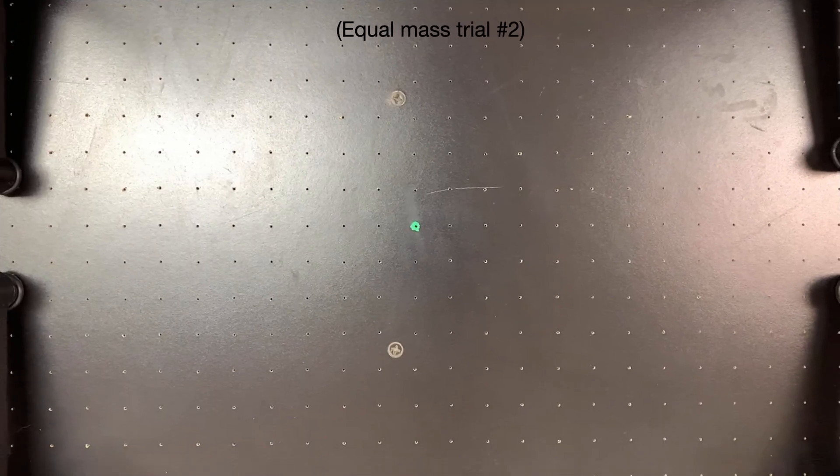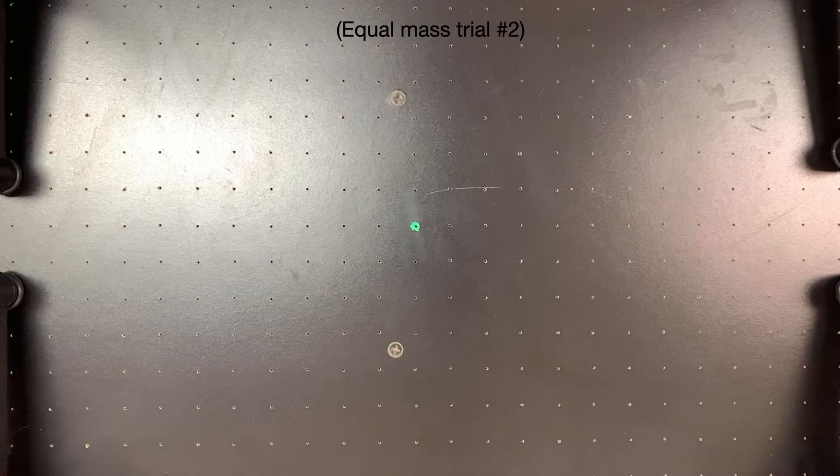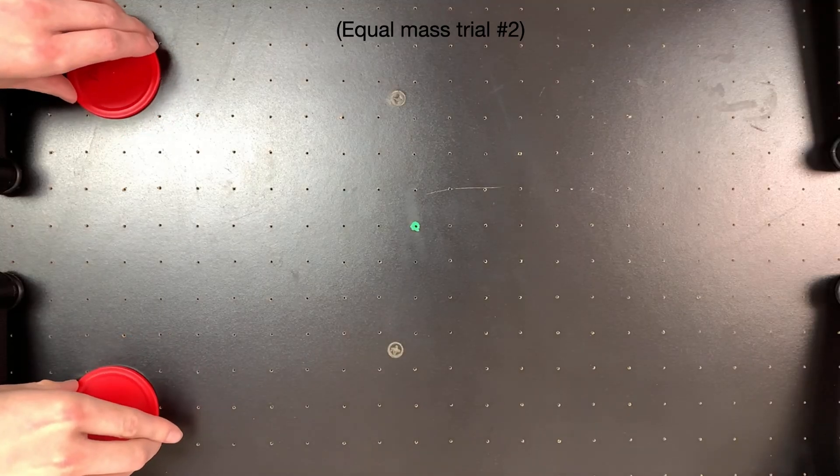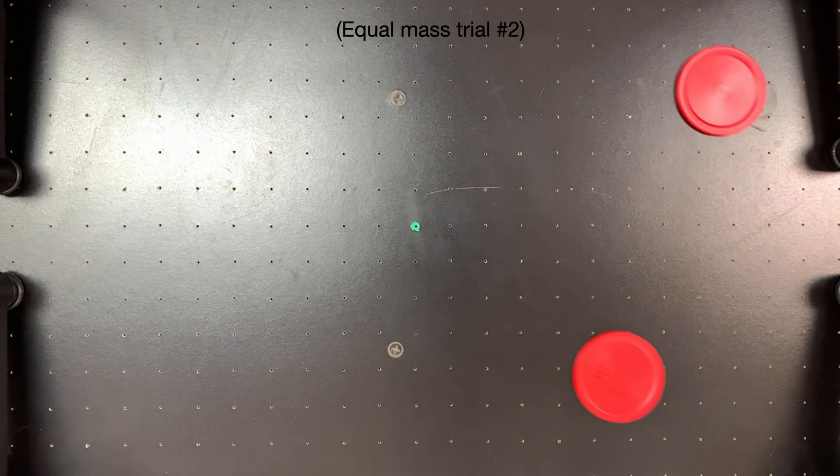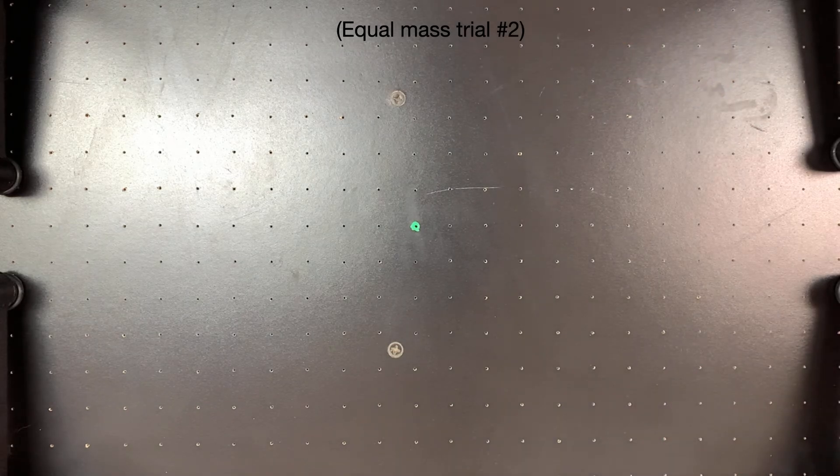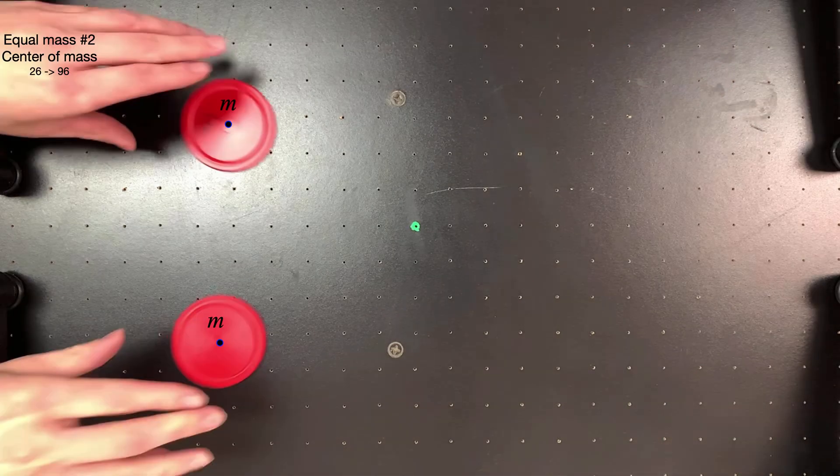We have one more collision to look at. Going back to the pucks with equal mass, we'll now throw the pucks from left to right and let them collide. As before, we'll mark puck positions every 10 frames and mark the center of mass position.